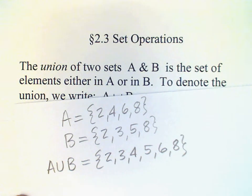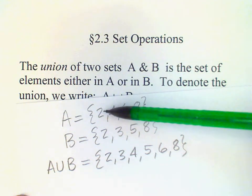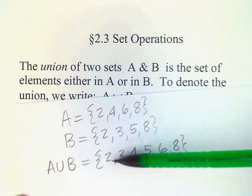And notice when I form my union, I do not list an element which is in both of the sets twice. I only list it once.